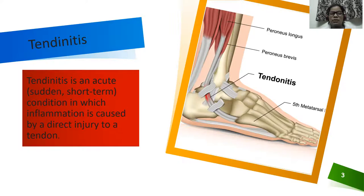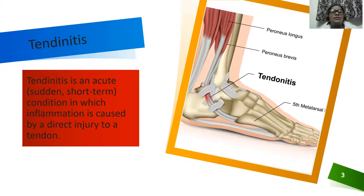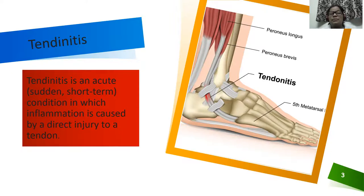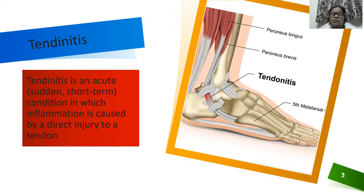If you are playing or doing something and during that movement you sustain an injury — that sudden trauma, that short-term condition with inflammation — is tendinitis. The suffix '-itis' means inflammation. In the picture, the redness is showing tendinitis because there is direct injury to the tendon causing inflammation.